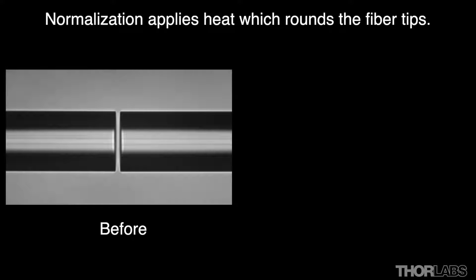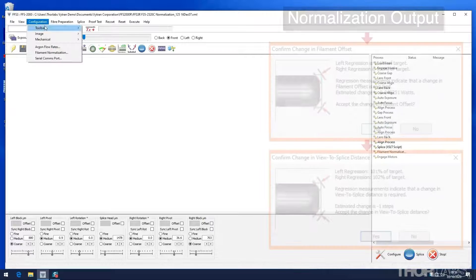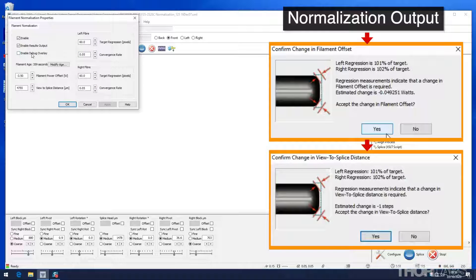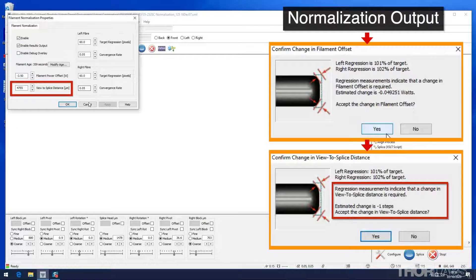Normalization applies heat to two flat cleaved fibers which causes the surface tension of the molten glass to round the tips. Then the software will recommend changes to not only the filament power offset but also the view to splice distance.